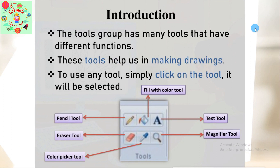Let's move on to the introduction. The tools group has many tools that have different functions in MS Paint. We have a tools group which looks like this. This tools group has many tools with different functions. These tools help us in making drawings.